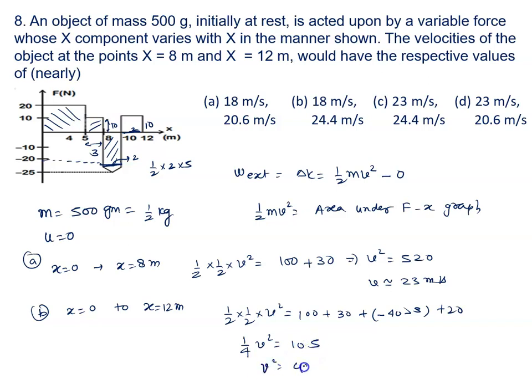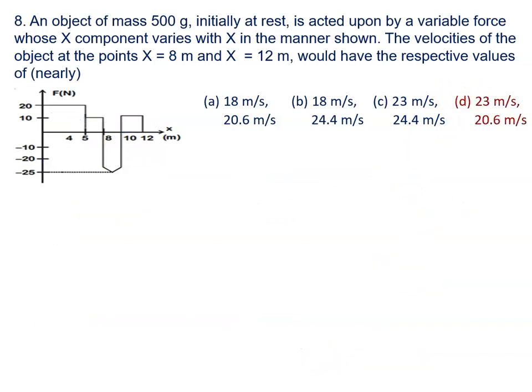So v² is 4 times 105, which is 420, and v is approximately 20.6 m/s. When we observe, the right answer is option D: 23 m/s and 20.6 m/s.